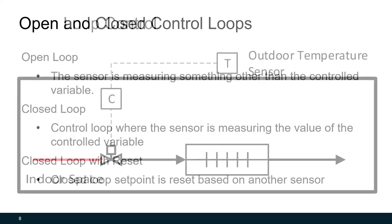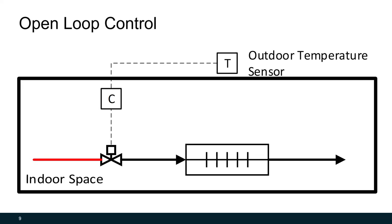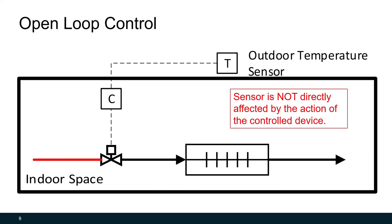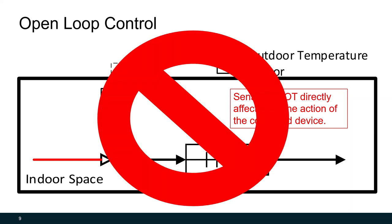This is an example of open loop control. Here we're heating a space with a hot water heat exchanger, but the temperature sensor has been moved outside of the building — it's measuring the outdoor temperature, not directly measuring our controlled variable, which is indoor space temperature. We really want the indoor space to be warm, not the outside. This is an open loop. It has its place, but it's not usually recommended because you're not directly measuring the variable.